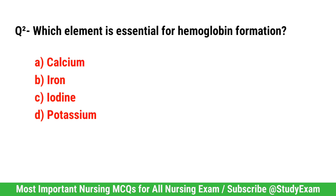Question No. 2. Which element is essential for hemoglobin formation? Correct option is B. Iron.